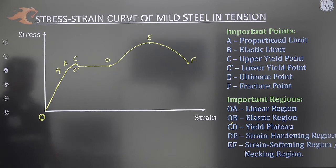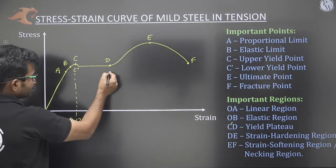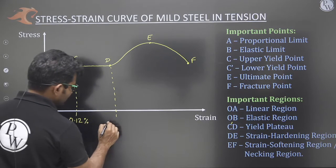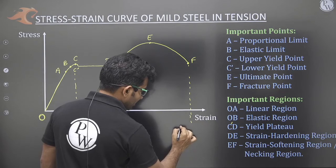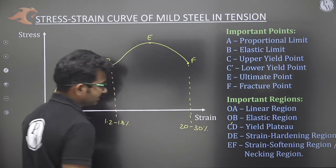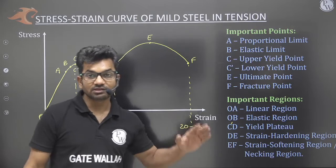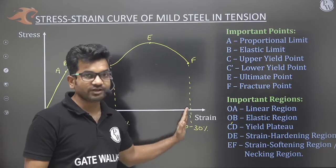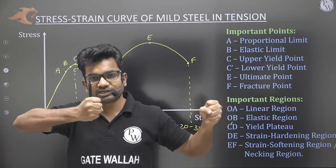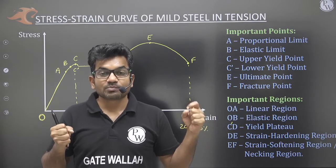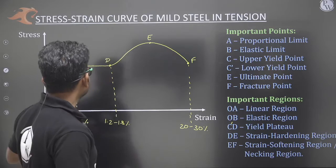Regarding strain values at key regions: up to the proportional limit the strain is approximately 0.12%. Where the yield plateau ends, the strain is about 1.2 to 1.8%. At the fracture point, the strain is around 20% to 30%, and for mild steel we can take 25% on average. This means a 1-meter long steel rod must be stretched by 0.25 meters before it breaks — which shows that mild steel is very ductile.